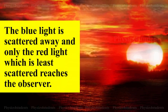At sunrise and sunset, the rays from the sun have to travel a large part of the atmosphere than at noon. Therefore, most of the blue light is scattered away and only the red light, which is least scattered, reaches the observer. Hence, the sun appears reddish at sunrise and sunset.